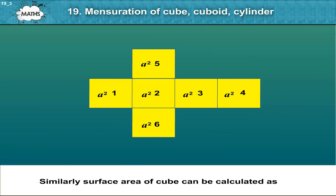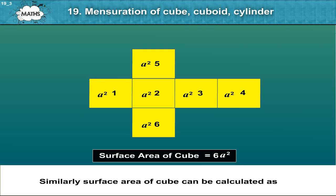Similarly, surface area of a cube can be calculated as surface area of a cube is equal to 6a squared, where a is the edge of the cube.